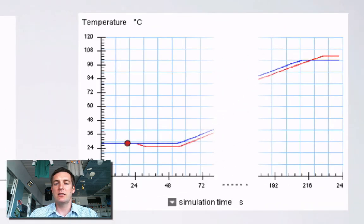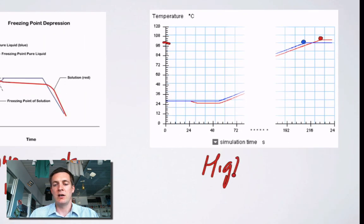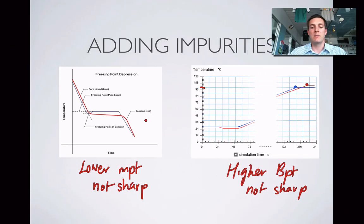Here's a heating curve — this is probably water, since the boiling point is at 100 degrees. The blue line reaches the boiling point and the temperature stops rising. But with an impurity added — the red line — notice that the temperature stops rising at a higher temperature, so the boiling point is higher when you've got an impurity. We'll look at that again later when we come to vapour pressures. What we can't see so well on this graph is that the boiling transition is also not as sharp. So the differences when we add impurities are: melting points drop, boiling points rise, and they stop being such precise temperatures.